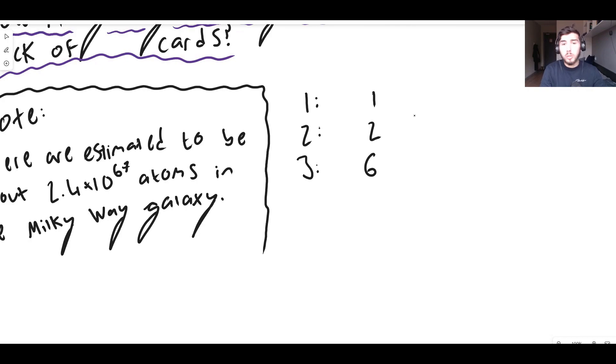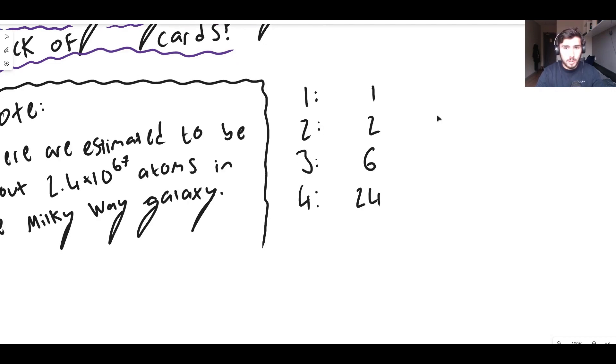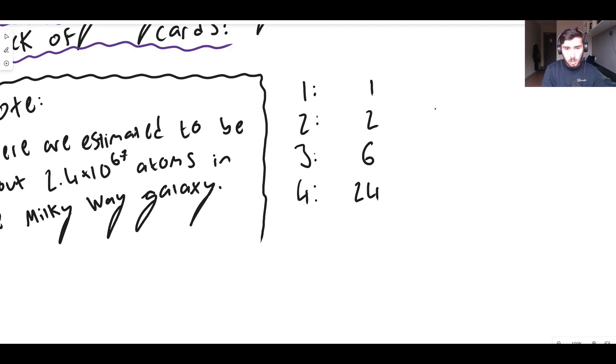If you have four objects there are actually 24 different ways to arrange these objects. But how am I generating these numbers? Five objects. Again it will take a long time but you can try it if you like. You will get 120 different ways to arrange five objects all the time.